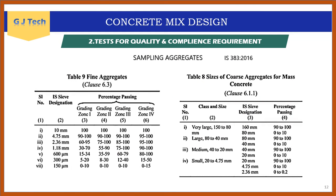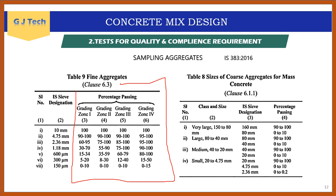IS 383 also provides Table 9 for fine aggregate grading from Zone 1 to Zone 4. For example, for Zone 2 aggregates sieved from 10 mm down to 150 microns, the percentage retained or passing on each sieve must lie within the specified limits for that zone.